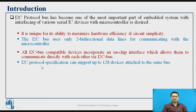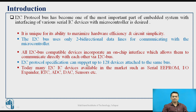I2C protocol can support up to 128 different devices attached onto the same bus. Some examples include serial EEPROM, I2C-supporting memory, IO expanders, real-time clock ICs, serial ADC, serial DAC, and various sensors — all of which can be interfaced to the microcontroller using only two pins if I2C protocol is supported.